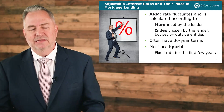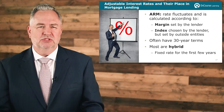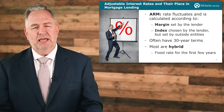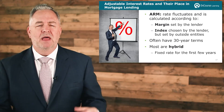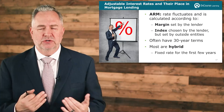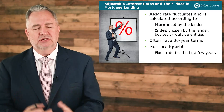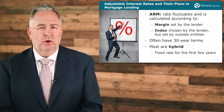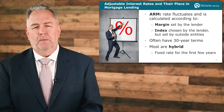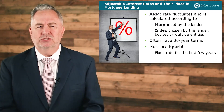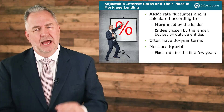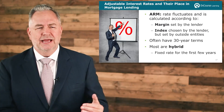Once it begins adjusting, the new rate is generally calculated by adding together what is known as the margin, which is a rate set by the lender that is fixed and will not change over the life of the loan, and represents the lender's operating costs and minimum profit margin.